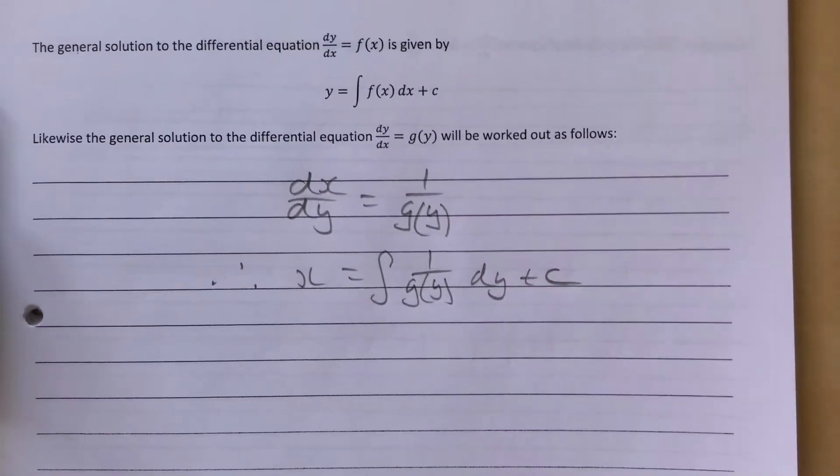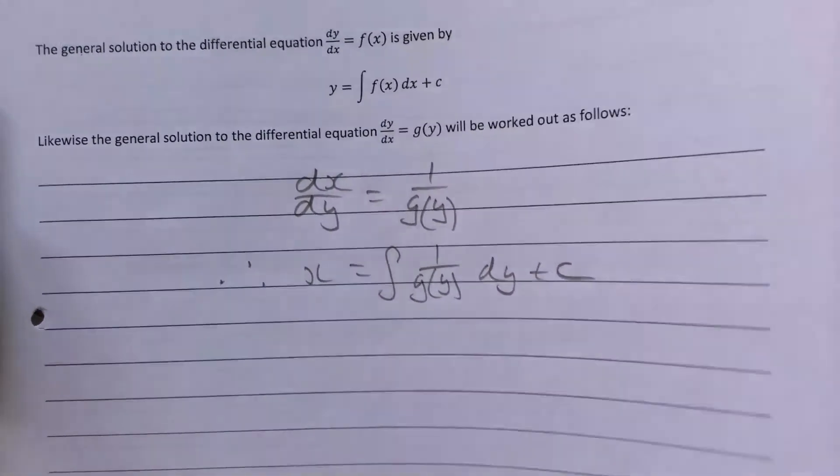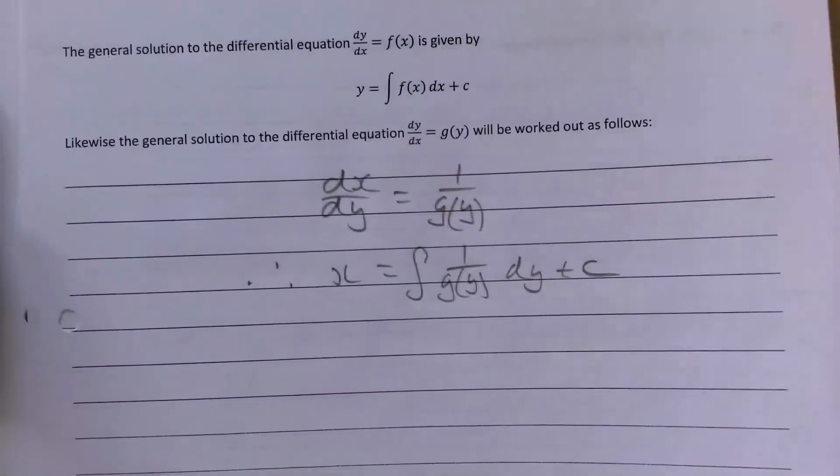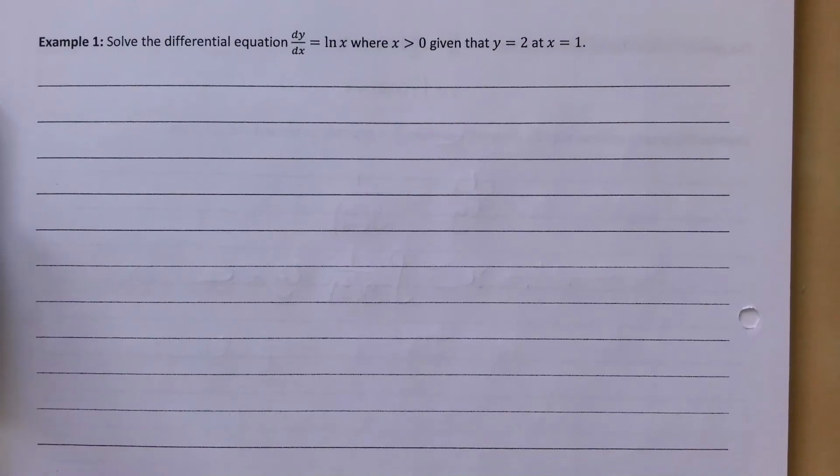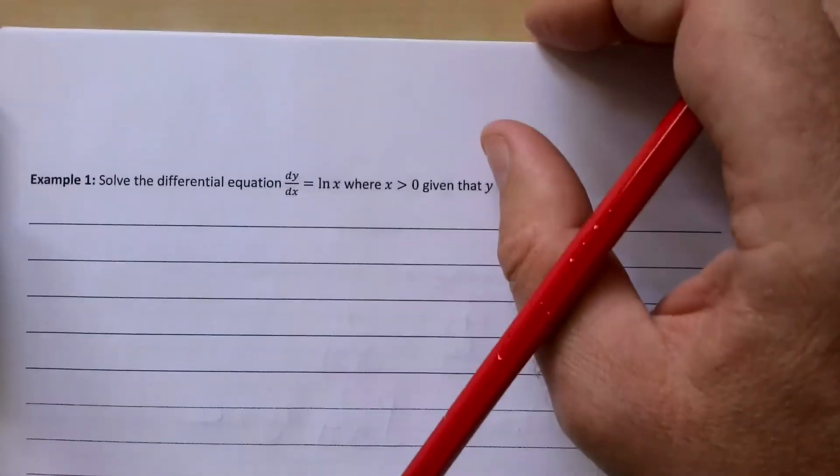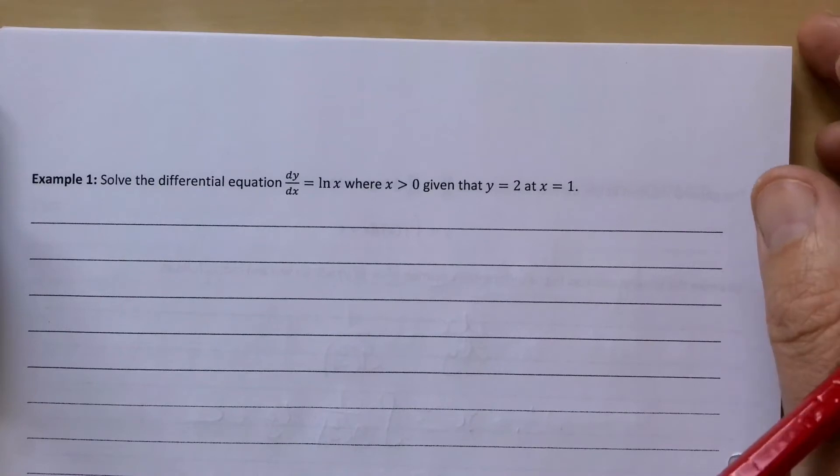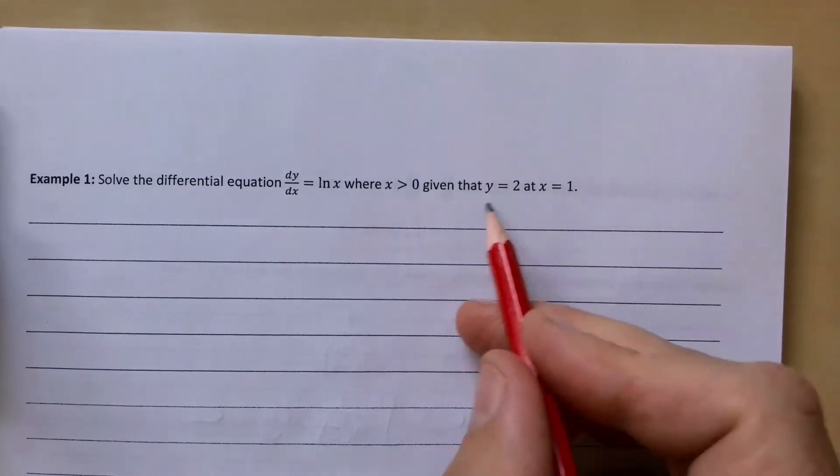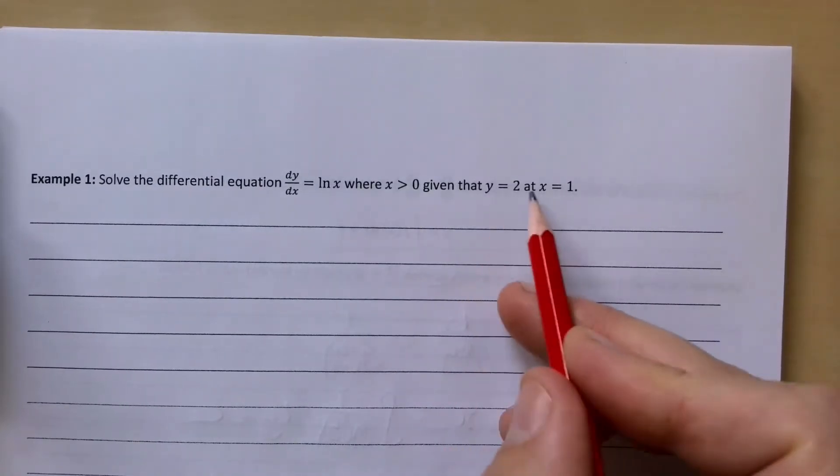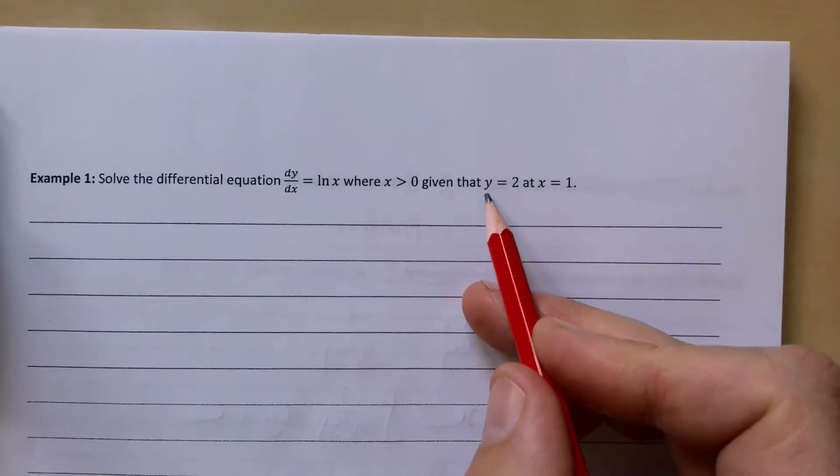I wouldn't worry too much about that. I tend to just separate the variables no matter what you have. But let's look at a couple of examples in this case. Solve the differential equation dy/dx = ln(x), where x > 0, given that y = 2 at x = 1. That's our boundary condition, so we can work out our particular solution.